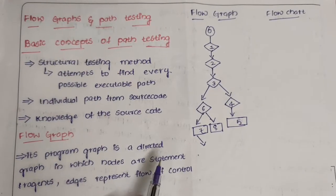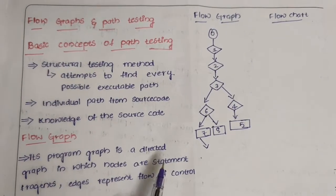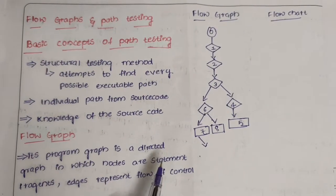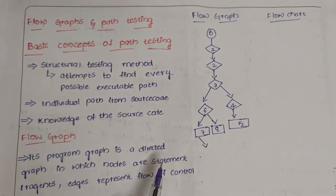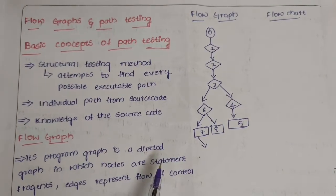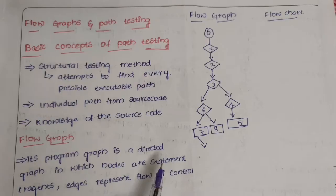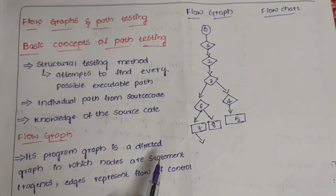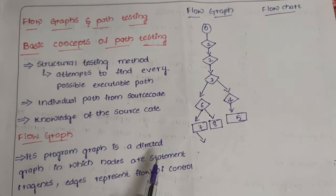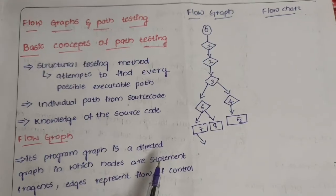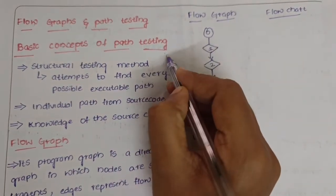Today's video we are going to discuss about Unit 1 Part 2: flow graphs and path testing. Flow graphs are a diagrammatic representation of any statements or sequences. Path testing is nothing but testing the software in a sequential manner.